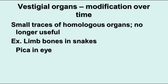Another thing you often see is vestigial organs — small traces of organs that are no longer useful. For instance, some snakes have limb bones even though they don't have legs. You also have a structure in your eye called the plica, that little interior corner piece, which is the remains of a third eyelid like frogs and snakes have.